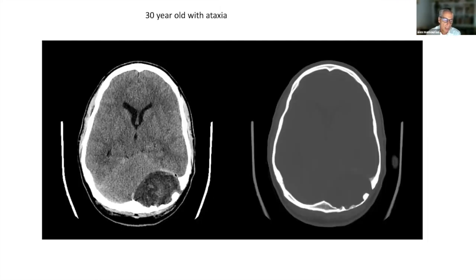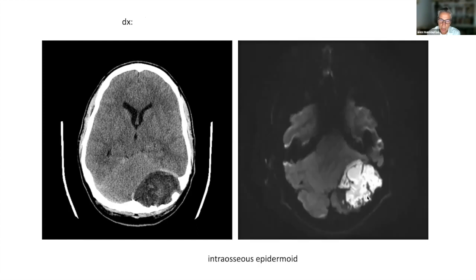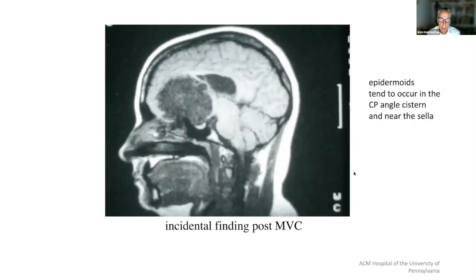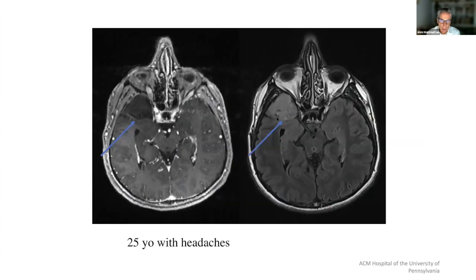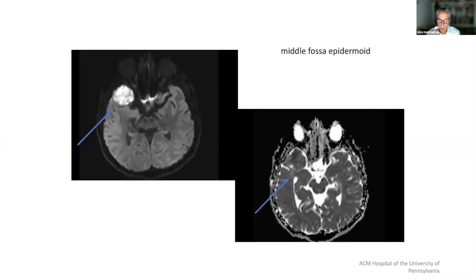I want to distinguish that from this entity: a low signal intensity or low attenuation mass in the brain with some scalloping in the bone — not frank destruction, more remodeling. This is what it looks like on the diffusion scan. Here is a different patient, and another patient, with similar disease. You can see the lesion — it is not as bright as a chordoma and does not enhance. These are all epidermoids. To summarize: metastatic disease, chordomas, chondrosarcoma, and epidermoid. Enhancement and bone destruction should lead you away from epidermoid.